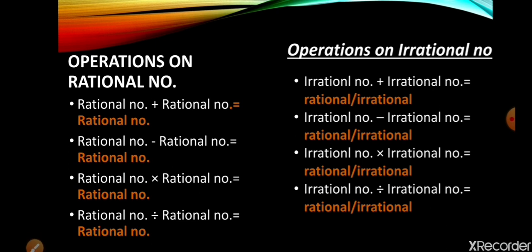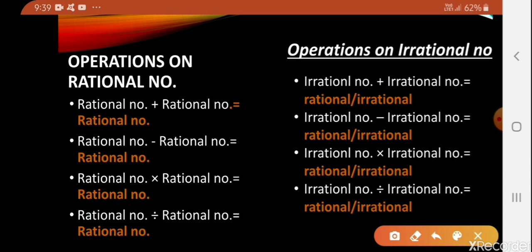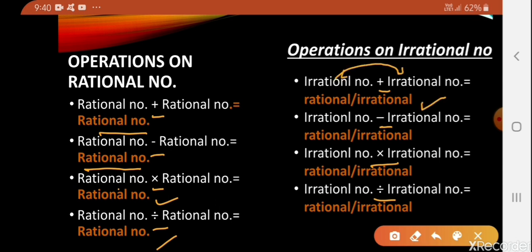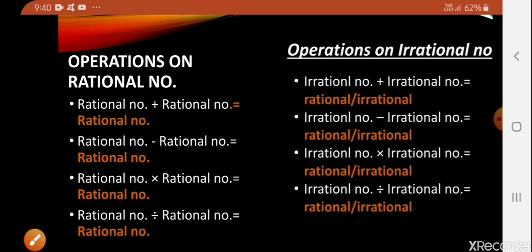Here is the summarized form of what we have learned so far. Addition, subtraction, multiplication, and division between two rational numbers always gives a rational number. But if you perform the same operations between two irrational numbers, then the result can be rational or can be irrational.